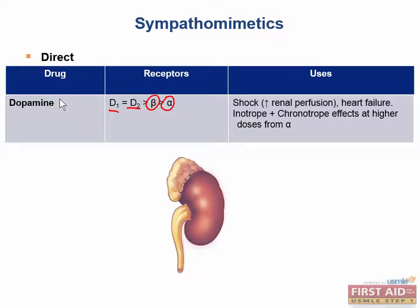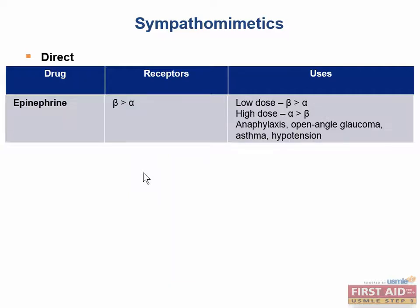Dopamine is especially useful in the treatment of shock because it raises blood pressure without reducing renal vascular flow. D1 receptors relax renal vascular smooth muscle, which preserves perfusion to the kidney — very important in the case of shock. At high doses, epinephrine is going to stimulate alpha-1, alpha-2, beta-1, and beta-2 receptors.